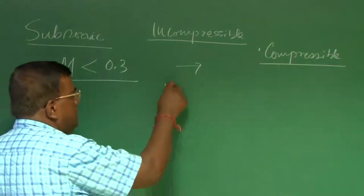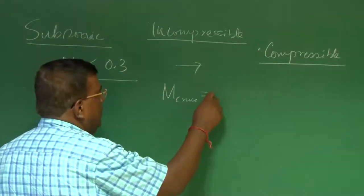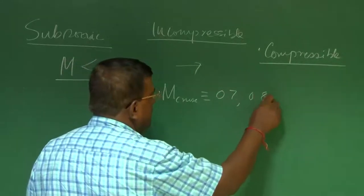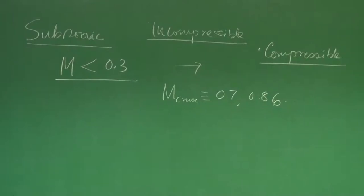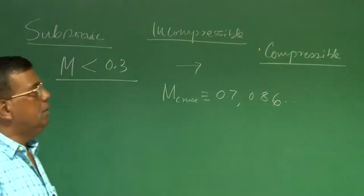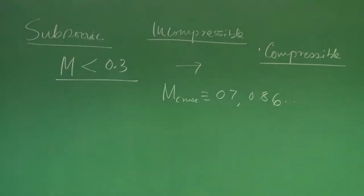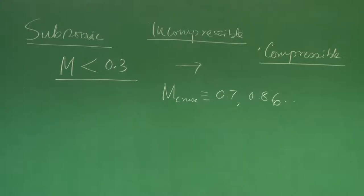For example, the cruise Mach number could be of the order of 0.7, 0.8, or even 0.86. Who stops me going further? Or who cautions me that if you go further, you have to do something extra? We all know that as I increase Mach number, there is formation of a shock wave that results in drag and flow separation. So immediately you have to worry about engine power, structural weight, and vibration associated with shock waves and flow separations.